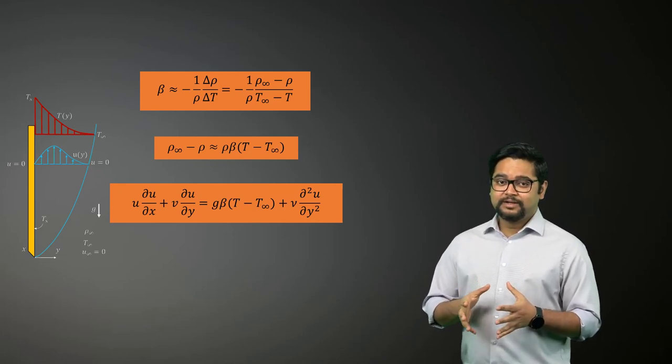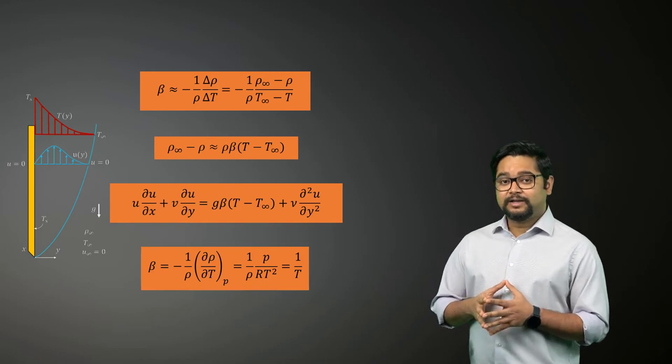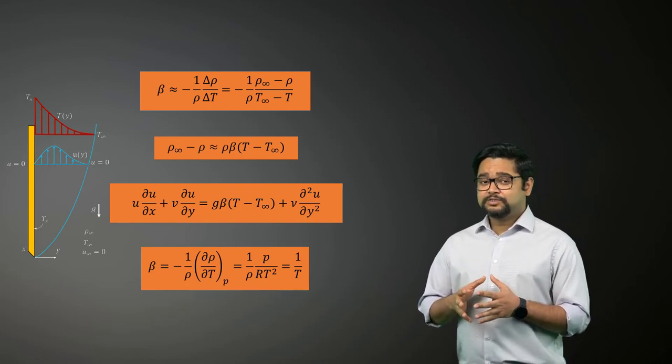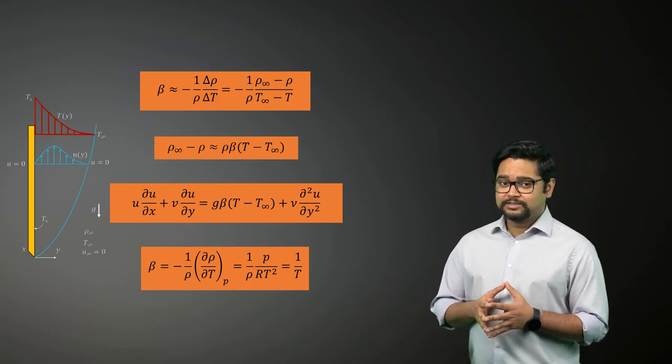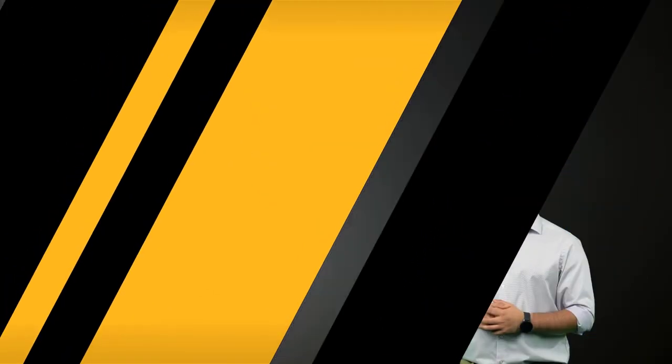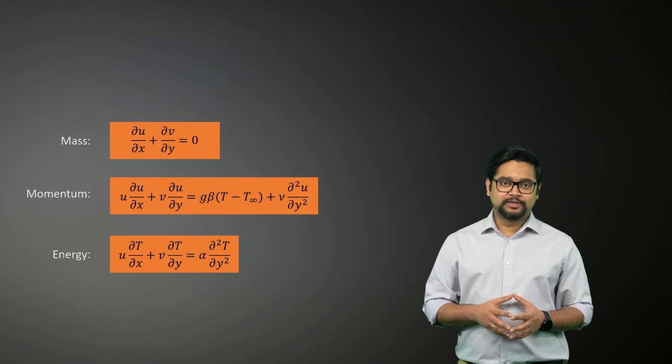The expansion coefficient beta can be determined for ideal gases using the following expression. In cases of liquids and non-ideal gases, beta is often obtained from property tables. In conclusion, these are the three governing equations for natural convection flows.